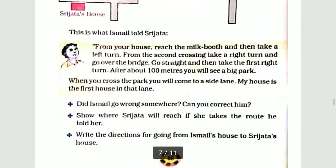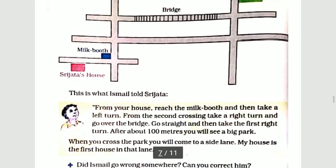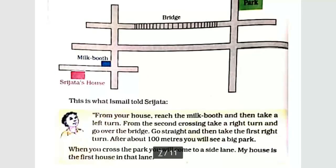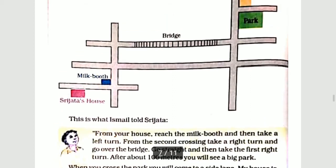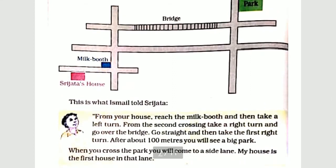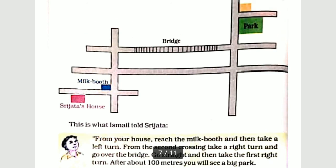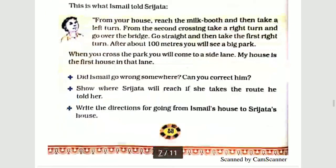Did Ismael go wrong somewhere? Can you correct him? Yes, Ismael is wrong. When you cross the bridge, instead of taking the first right turn, you need to take the first left turn. That is where the directions went wrong.